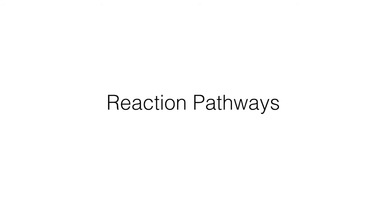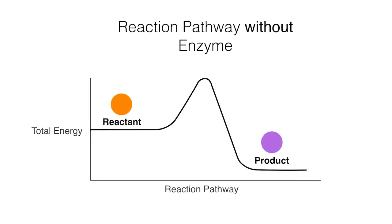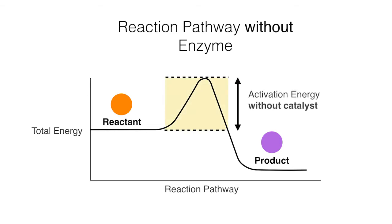Let's have a look at two reaction pathways: one with an enzyme and one without. First, the reaction pathway without an enzyme. As you can see in this graph, the reaction forms a product by following this reaction pathway. This hill part of the graph is the activation energy — the minimal amount of energy needed for a reactant to turn into a product. As you can see, the activation energy needed without a catalyst is quite large, meaning that a lot of energy is needed to break food down into useful energy. We obviously don't want this type of inefficiency.